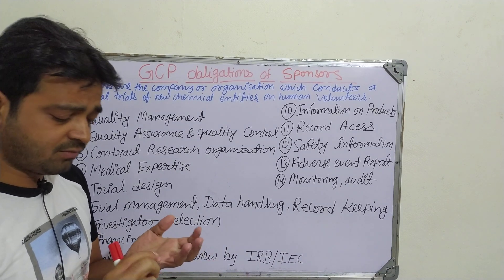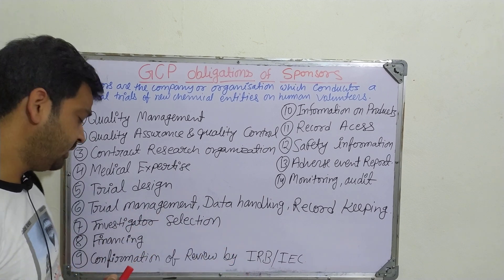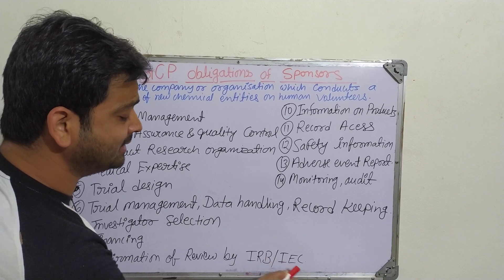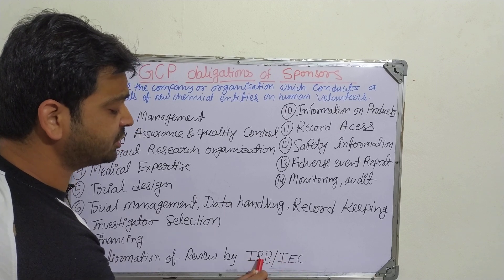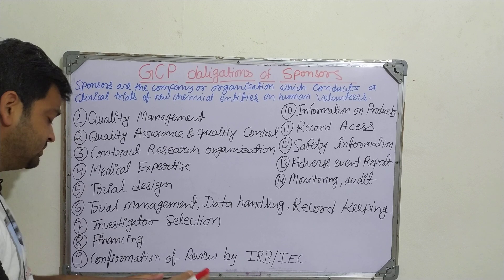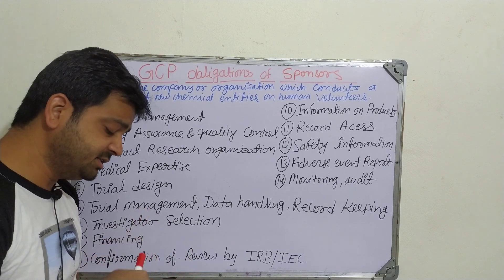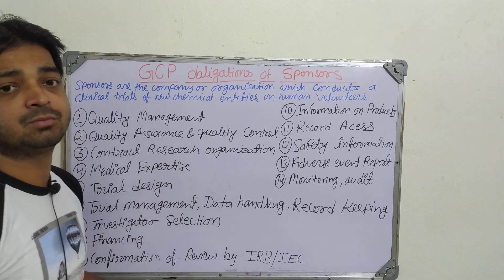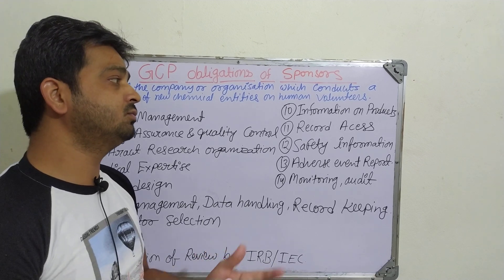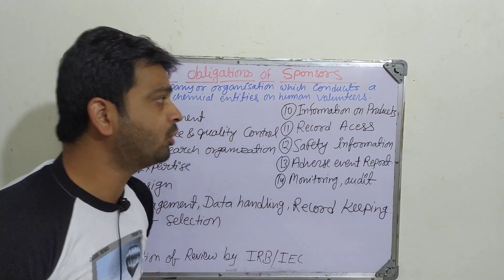Financing is very important — the sponsor has to finance each and everything, from a small needle to big rooms, beds, and all other things. Confirmation of review by the IRB and IEC — the Institutional Review Board or Independent Ethics Committee — is also required. These boards review the trial, and whatever decision comes out is confirmed by the sponsor, since it is the sponsor who has invested the money.